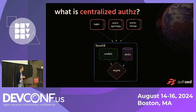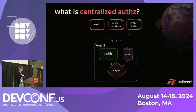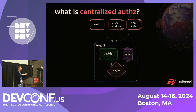Centralized authorization means taking all those things — model, data, and engine — and putting them together into their own service. Any application can query it at any time: apps, microservices, your data warehouse, anything. The only thing those external consumers need to ask is: 'Does this subject have permission to perform this action on this particular object?' They don't care how that action was authorized. So if the underlying how changes — say you're refactoring and adding groups of users — none of those applications need to know. You change it in one place, with no code changes across the whole business.